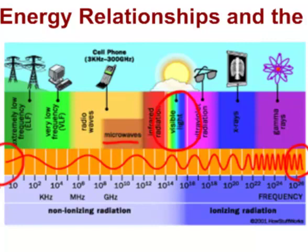Just below visible light we have infrared or heat waves, which you sometimes see on heat lamps that keep food warm in kitchens. Above visible light we have ultraviolet, which you can't see but need sunglasses to block, otherwise you might get skin cancer. Higher than that we have X-rays, which are very handy to see inside our bodies but can be damaging, and gamma rays, which have the shortest wavelengths and can do quite a bit of damage if you're exposed to them.